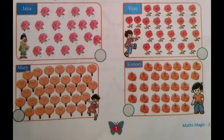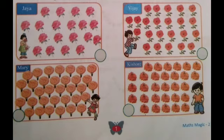Kishore counted 30 flowers. Write the number 30 in the given circle. Okay?